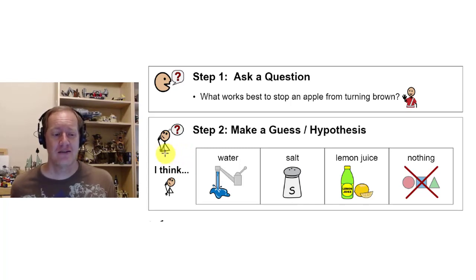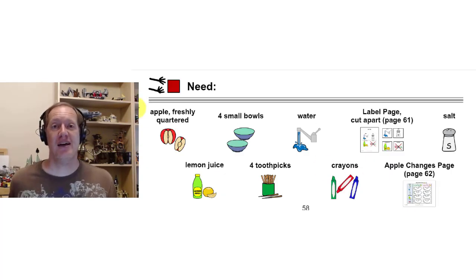Let's go ahead and make a guess or a hypothesis. What do you think will work the best to keep that apple from turning brown? Do you think water is going to work? Do you think salt will work best? Do you think lemon juice will work best? Or do you think if we just leave the apple in a bowl that will work best? Mark your answer.